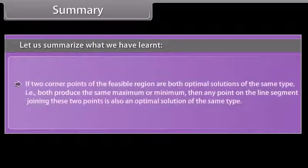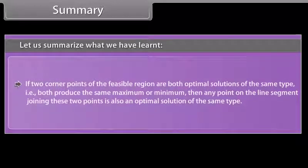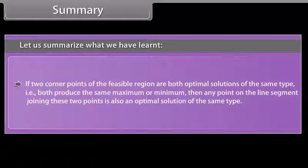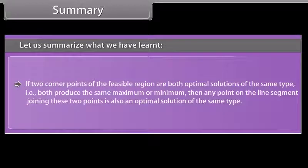If two corner points of the feasible region are both optimal solutions of the same type — both producing the same maximum or minimum — then any point on the line segment joining these two points is also an optimal solution of the same type.